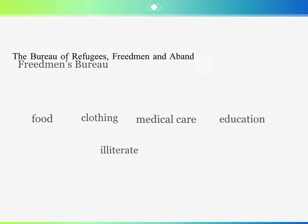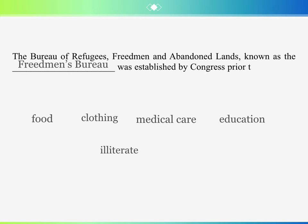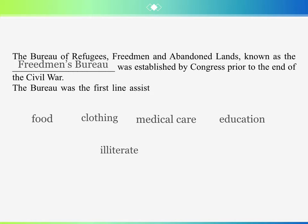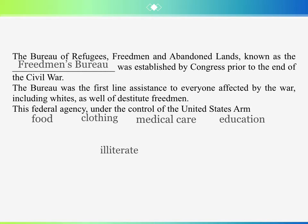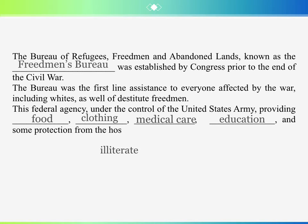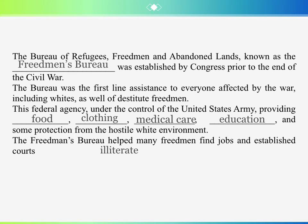The Bureau of Refugees, Freedmen and Abandoned Lands, known as the Freedmen's Bureau, was established by Congress prior to the end of the Civil War. The Bureau was the first-line assistance to everyone affected by the war, including whites as well as destitute Freedmen. This agency, under the control of the United States Army, provided food, clothing, medical care, education, and some protection from the hostile white environment. The Freedmen's Bureau helped many Freedmen find jobs and established courts to protect illiterate workers. The Bureau was also charged with distributing to Freedmen those lands that had been abandoned during the war or that had been confiscated as punishment for disloyalty to the Union.